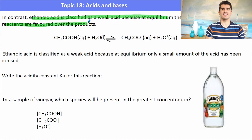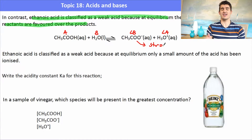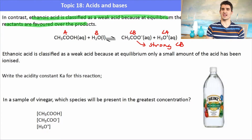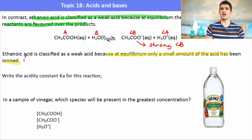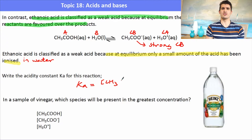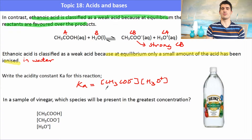For example, ethanoic acid is considered a weak acid because the reactants are favored in the equilibrium. We've got the ionization of ethanoic acid shown, where ethanoic acid is the acid and the acetate ion would be the conjugate base. That acetate ion is actually quite a strong conjugate base, which is why ethanoic acid is considered to be a weak acid, meaning only a very small amount of the acid molecules have ionized in water. So we'd write the acidity constant Ka equal to the concentration of the acetate ion multiplied by the concentration of H3O+, divided by the concentration of ethanoic acid.